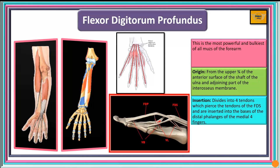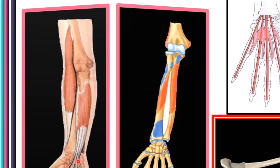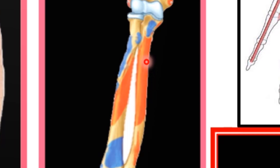Now we look at the deep muscles, starting with flexor digitorum profundus. It is the most powerful and bulkiest of all the muscles of the forearm, including both the anterior and posterior compartments. It takes origin from the upper three-quarters of the anterior surface of the shaft of the ulna and also from the adjoining part of the interosseous membrane.